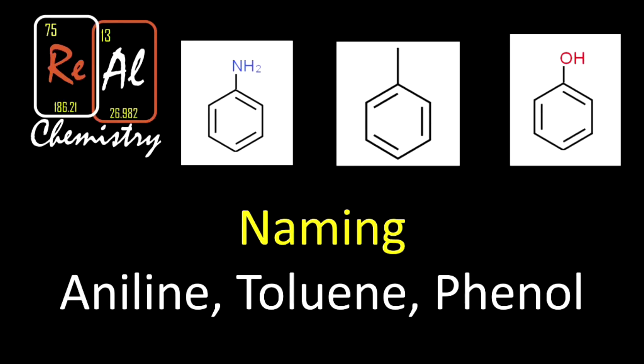What is up my friends, today we're going to be naming benzene derivatives. That's right, benzene derivatives - molecules that are derived from benzene. In this case, we're going to be looking at aniline, toluene, and phenol, three different molecules that all contain a benzene ring and something a little special.